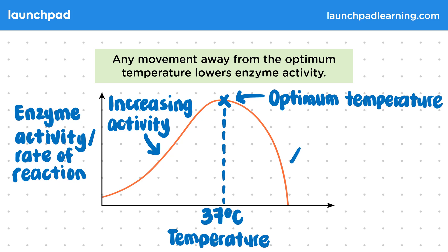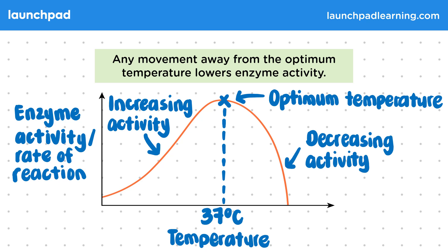However, after the optimum temperature, there's decreasing activity because it gets too hot. It's important that you're able to relate enzyme activity to temperature like this for your exam. So why does the enzyme activity go to zero when temperature increases too high?